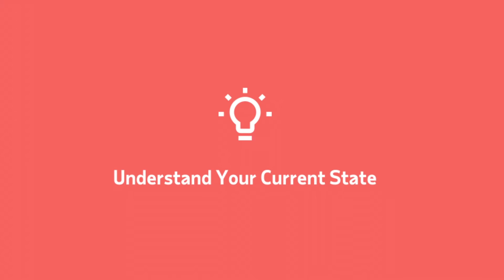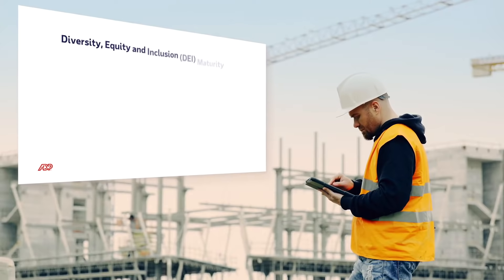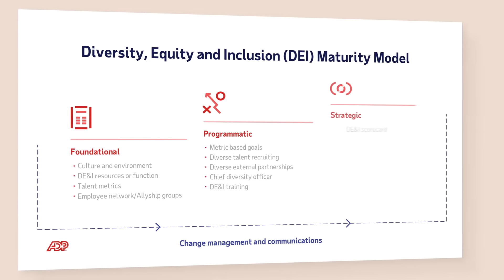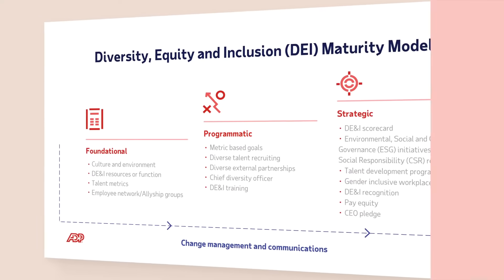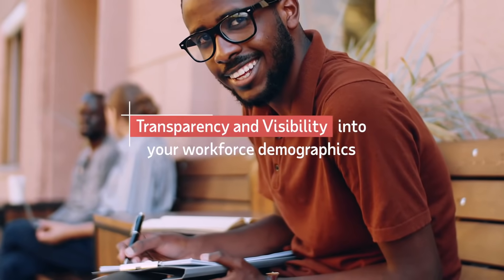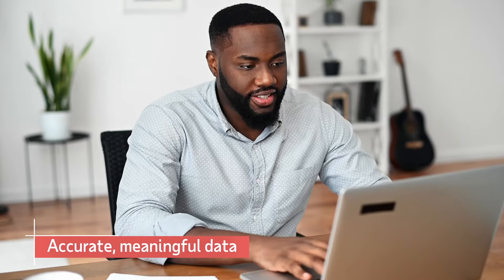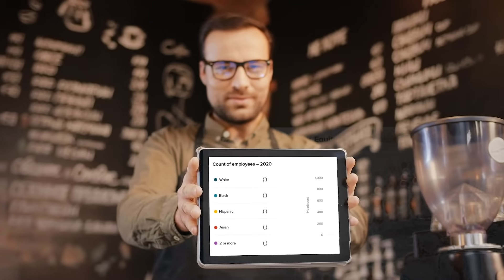Number one: develop an awareness and understanding of the current state of your workforce. It's critical to understand where your organization is in its DE&I journey. At ADP, we have developed a maturity model assessment to help enterprise clients — think of it as a snapshot of where your company is in its DE&I journey. Leaders also need visibility into workforce demographics. By having access to accurate, meaningful data, you can understand where your company is today, then set targets for diversity and inclusion.